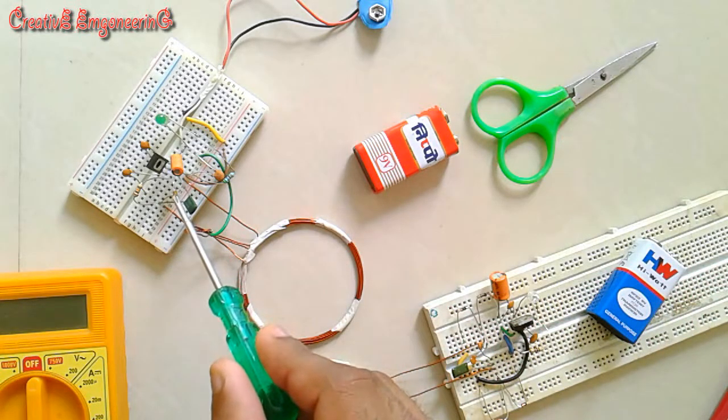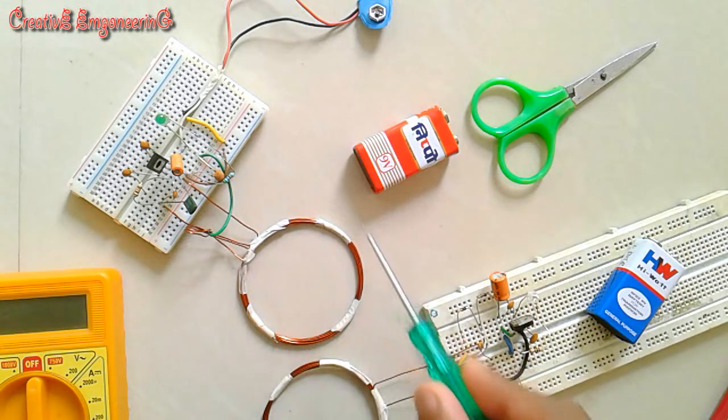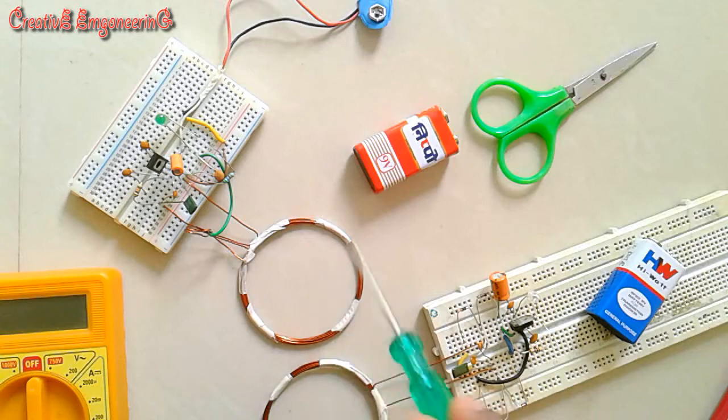This is the transmitter breadboard. This is the receiver. The transmitter sends power wirelessly through this coil and the receiver receives the power.